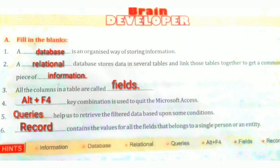Sixth question: dash contains the values for all the fields that belong to a single person or an entity. If we want to see all the fields of a single person — all the columns for one person — where do we look? In one record, one row. So the right answer is record.